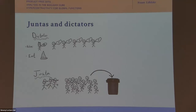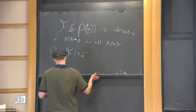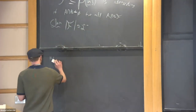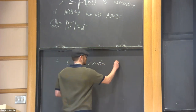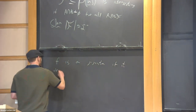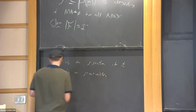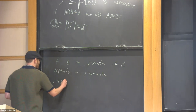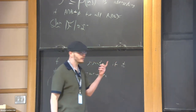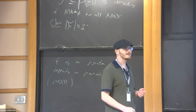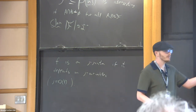Another important type of functions are the juntas. F is a j-junta if it depends on j variables, and we think of j as a constant. The dictator is a specific 1-junta; more generally, a 3-junta is when three people decide the outcome of the elections.